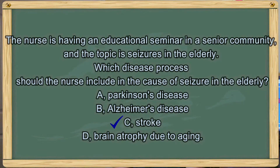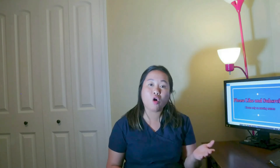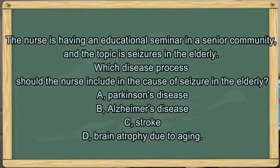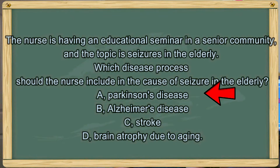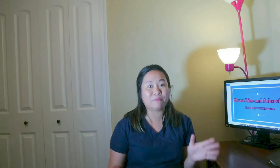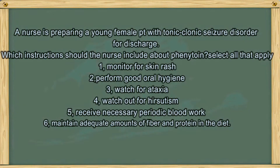I know you can get it right. The answer is C. Seizures may occur after a stroke. In this question, the three other options are all neurological diseases that occur over time, like Alzheimer's disease, Parkinson's disease, and brain atrophy. With the condition gradually getting worse, all of those options can be eliminated as a cause of seizures.